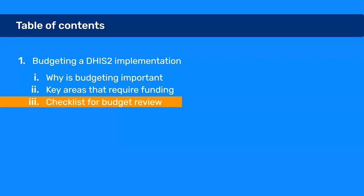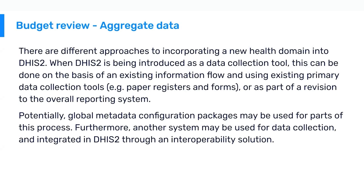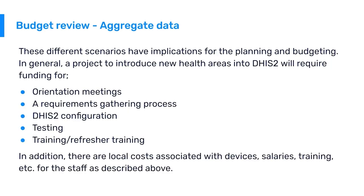Finally, I'll discuss a checklist for a budget review. There are different approaches to incorporating a new health domain into DHIS2: it can be done based on an existing information flow using existing primary data collection tools, as part of a revision of the overall reporting system, using global metadata configuration packages, or through interoperability with another system. These different scenarios have implications for planning and budgeting. A project introducing a new health area for aggregate data will require funding for orientation meetings with program staff, ministry, HISP teams, and other stakeholders.